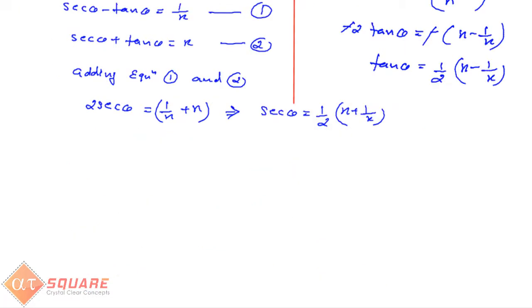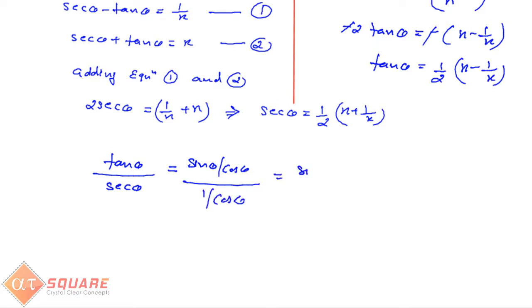Now we have to find the value of sin θ. What I will do is divide tan θ by sec θ. tan θ / sec θ = (sin θ / cos θ) ÷ (1 / cos θ) = sin θ / cos θ × cos θ = sin θ. So tan θ divided by sec θ equals sin θ.